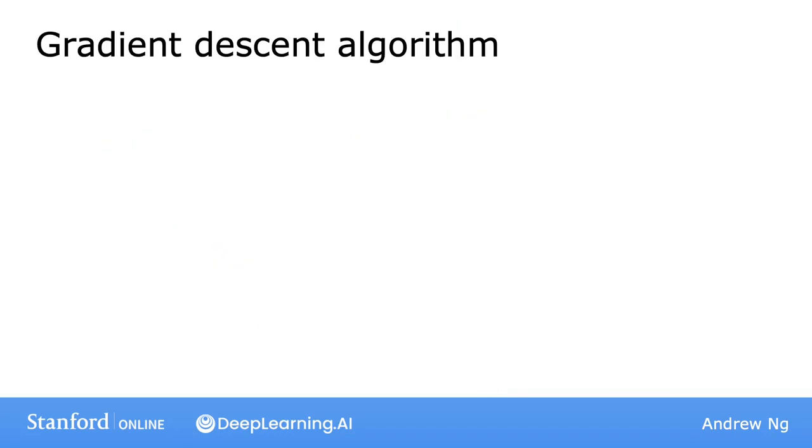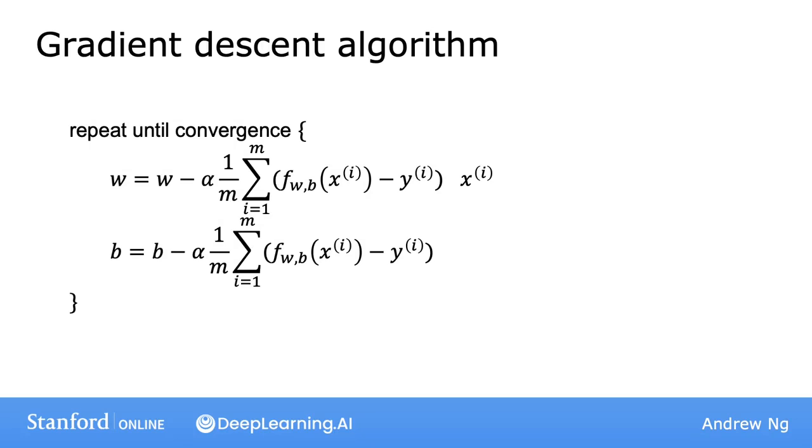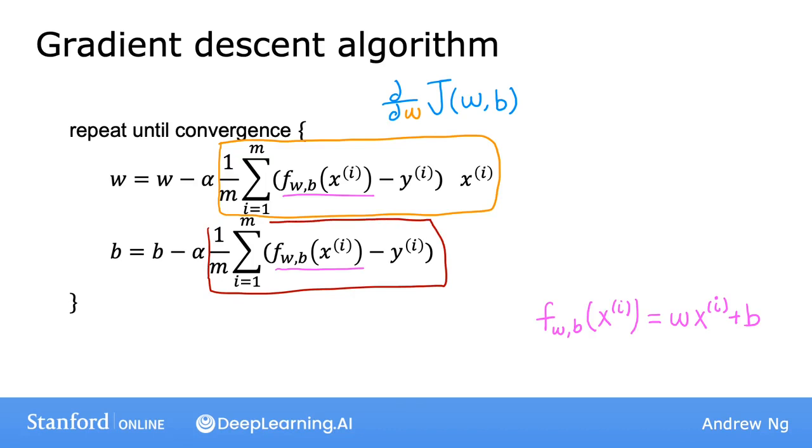So here's the gradient descent algorithm for linear regression. You repeatedly carry out these updates to w and b until convergence. Remember that this f of x is a linear regression model, so it's equal to w times x plus b. This expression here is the derivative of the cost function with respect to w, and this expression is the derivative of the cost function with respect to b.